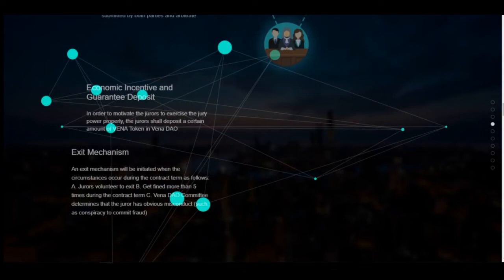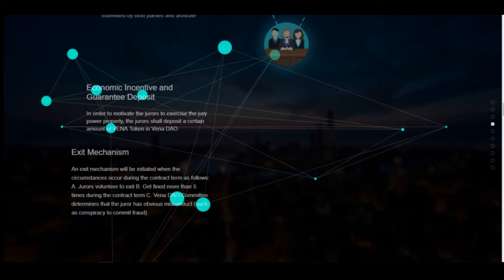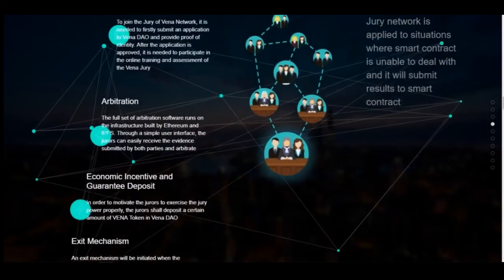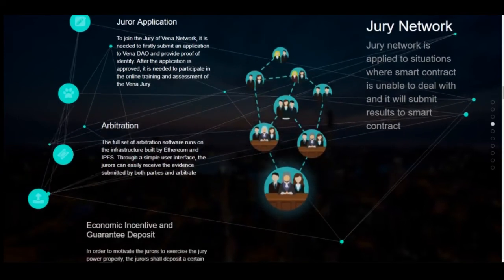An exit mechanism will be initiated when the following circumstances occur during the contract term: (a) a juror volunteers to exit, (b) a juror gets fined more than five times during the contract term, or (c) when the DAO committee determines that the juror has committed obvious misconduct, such as conspiracy to commit fraud.